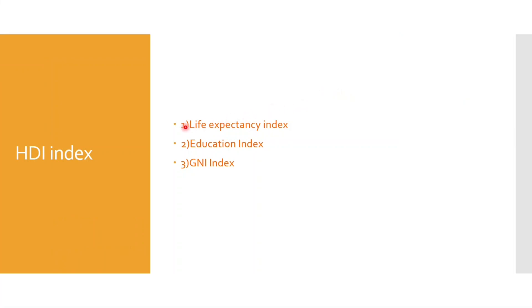There are three components of Human Development Index. The first is Life Expectancy Index, then Education Index, which is further divided into two parts, and the final one is GNI Index.